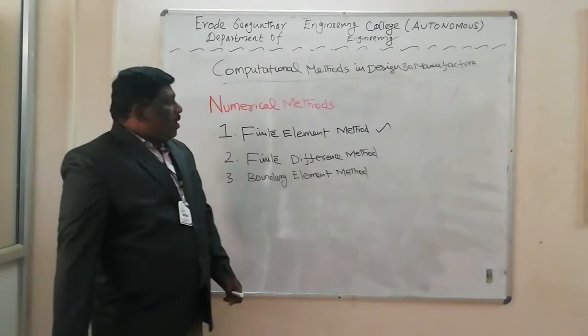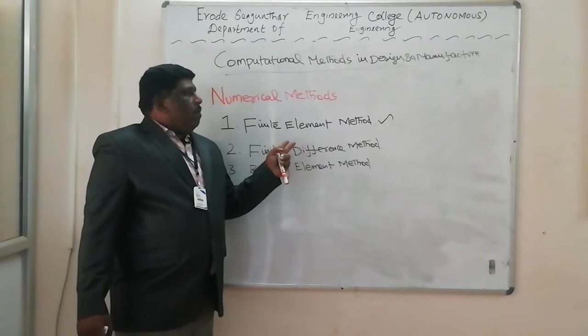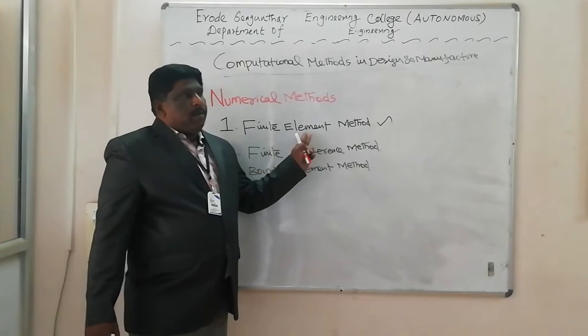Around the 1960s or 70s, there were only 10 to 15 papers published on finite element method. But now, 15,000 to 20,000 papers on finite element method have been published. From this, you can understand the importance of finite element method.